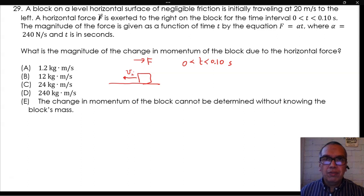The magnitude of the force is given as a function of time T by the equation F equals AT, where A is equal to 240 newtons per second and T is in seconds. What is the magnitude of the change in momentum of the block due to the horizontal force?